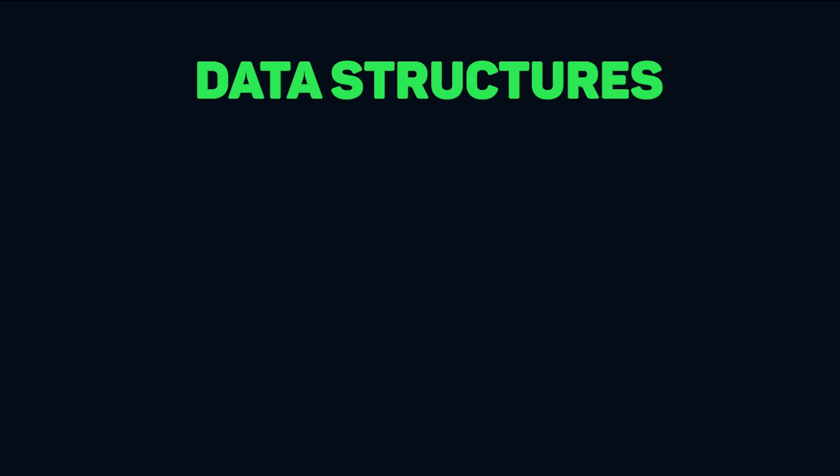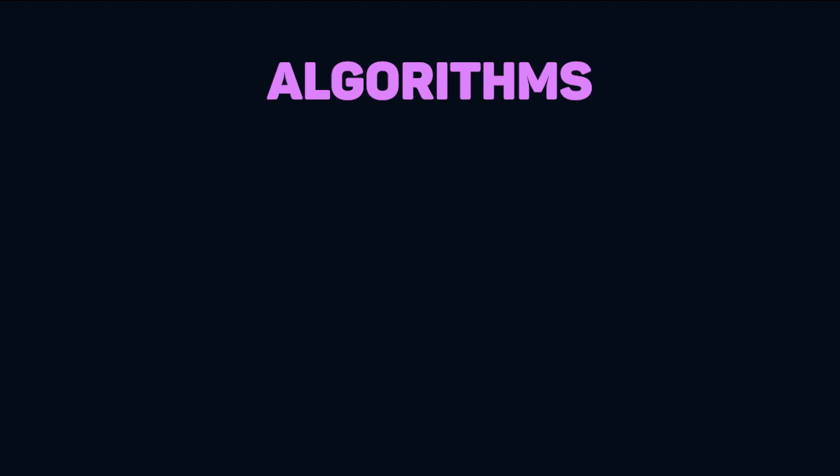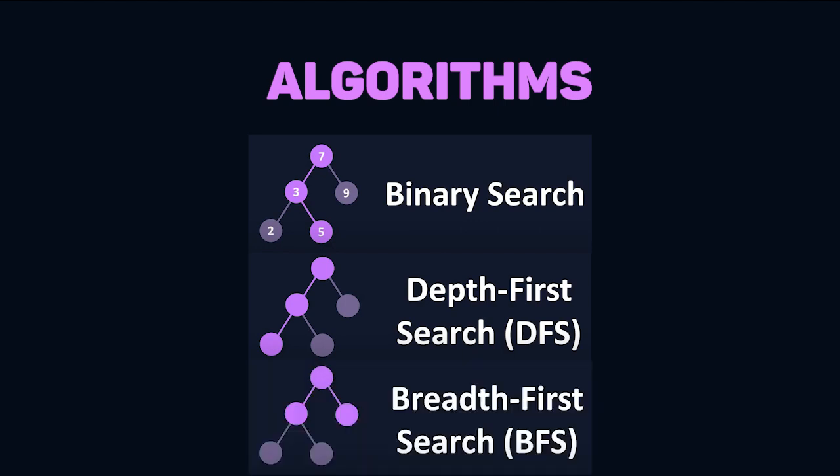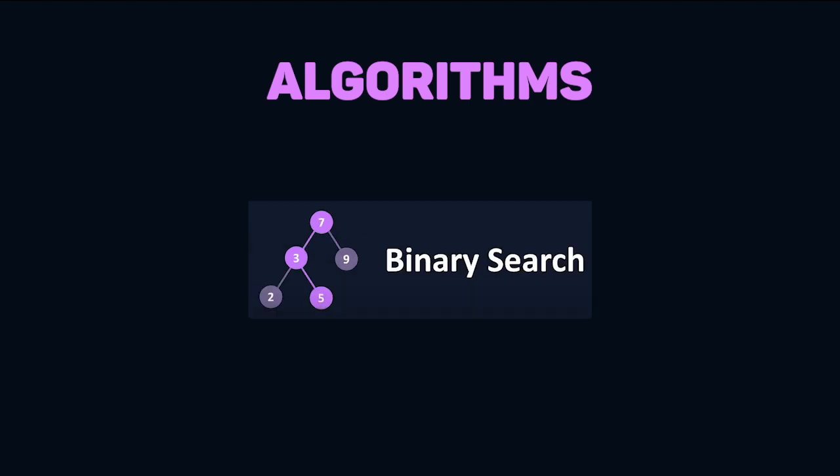Now that we've touched on the core data structures, I'll also briefly cover the common algorithms you should know. The three you absolutely have to know are binary search, depth-first search, and breadth-first search. Binary search is a search algorithm used to find a target value in a sorted array. The array is divided into halves, and the half without the target value is discarded. This process continues until we reach our value.